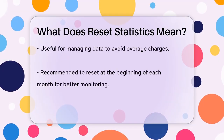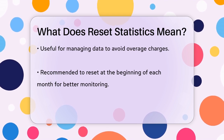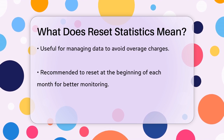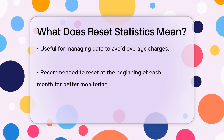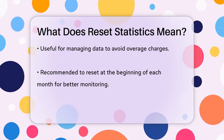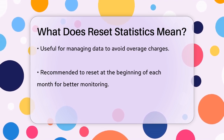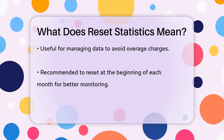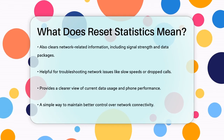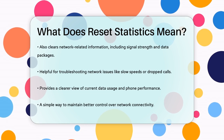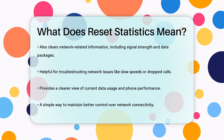This can be particularly helpful for managing your data usage to avoid overage charges. For instance, if you reset your statistics at the beginning of each month, you'll get a fresh start to monitor how much data you're using. Resetting network statistics also clears other network-related information, such as Wi-Fi and cellular signal strength, the number of sent and received data packets, and call times. This can be useful when troubleshooting network issues like slow internet speeds or dropped calls.